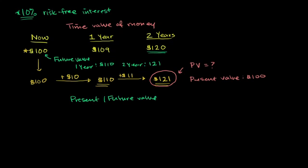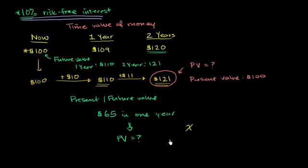And so with that in mind, let me give you one slightly more interesting problem. So let's say that we're going to assume this the whole time, 10% risk-free interest. And let's say that someone says that they're willing to give us $65 in one year. And we were to ask ourselves, what is the present value of this? So remember, the present value is just asking you, what amount of money that if you were to put it in the bank at this risk-free interest would be equivalent to this $65?